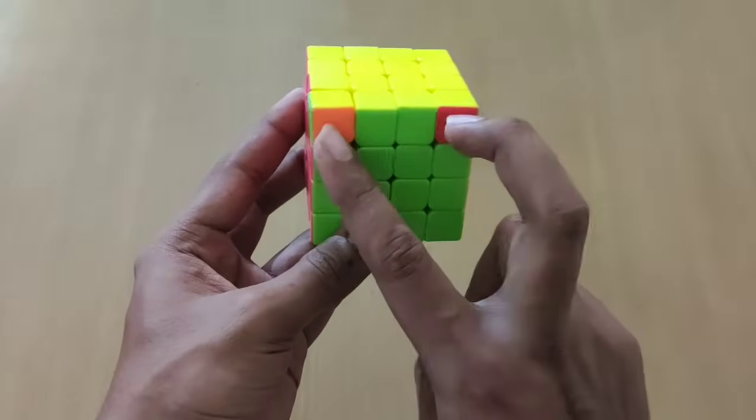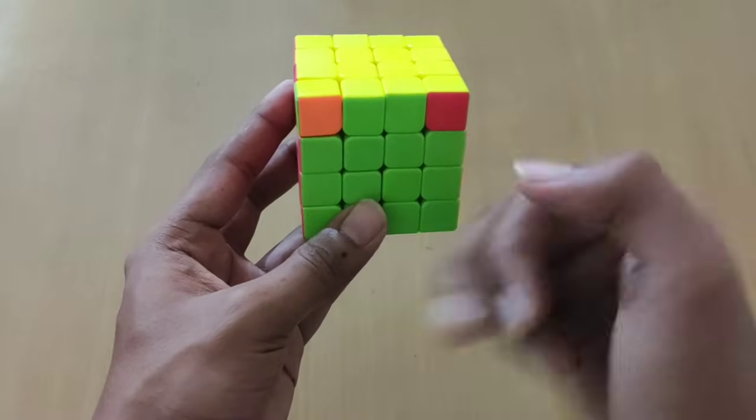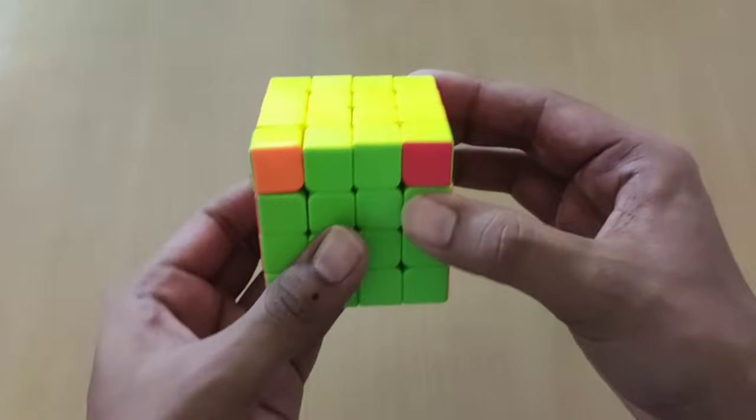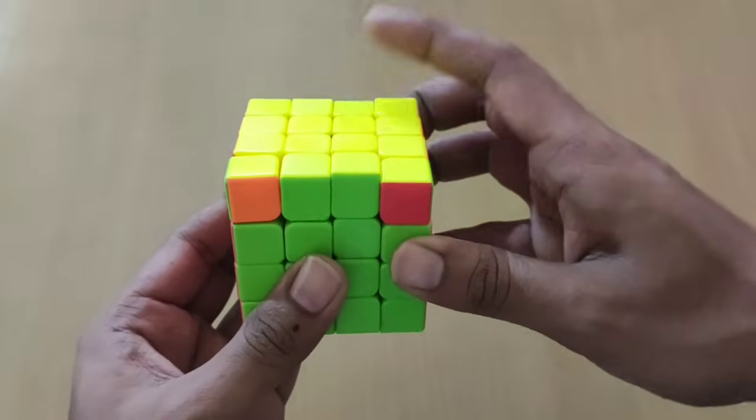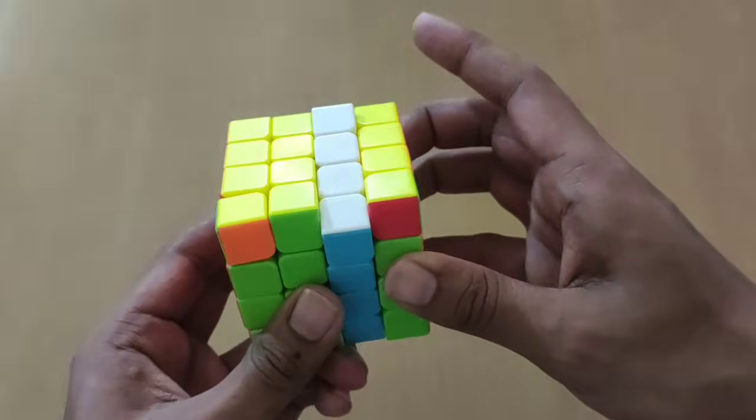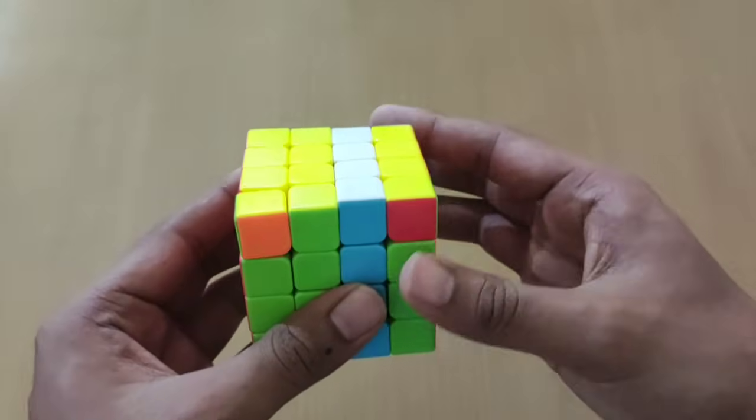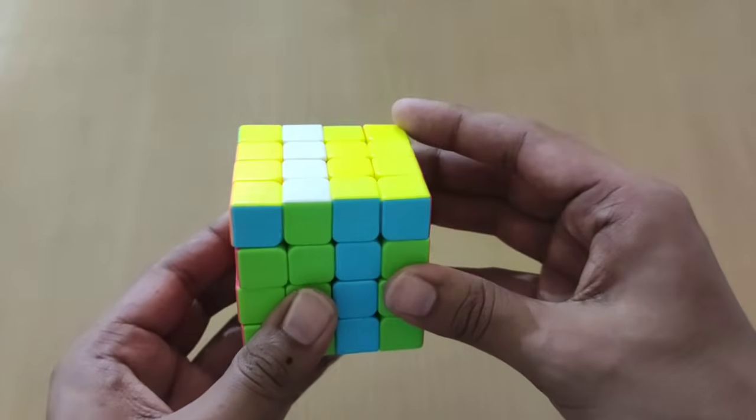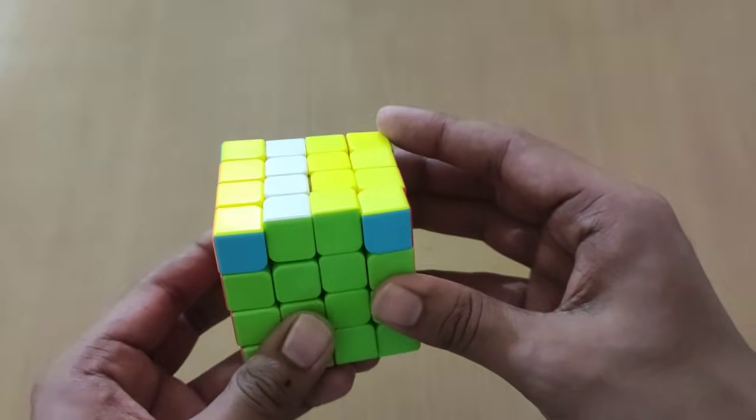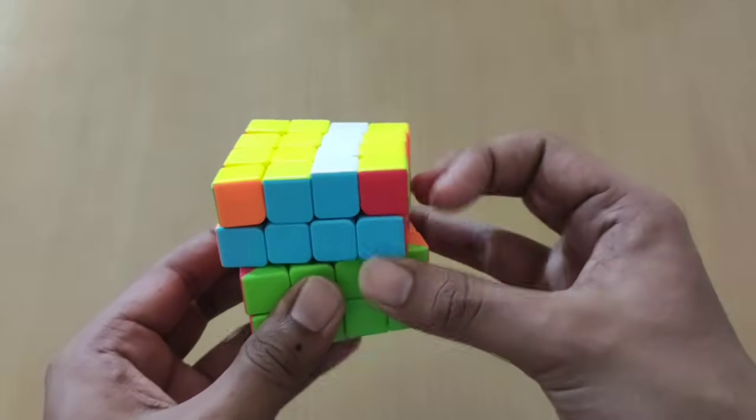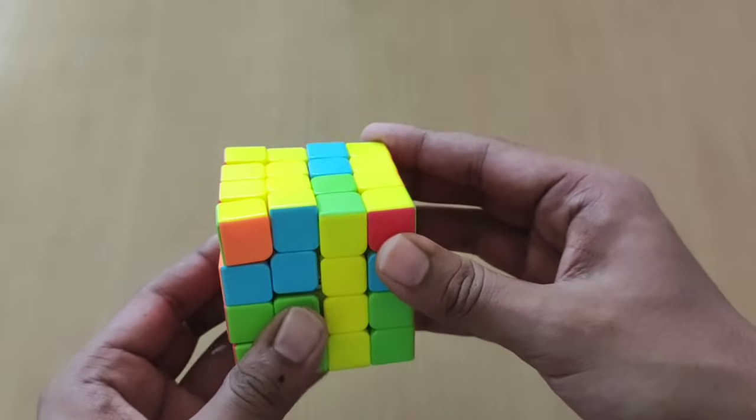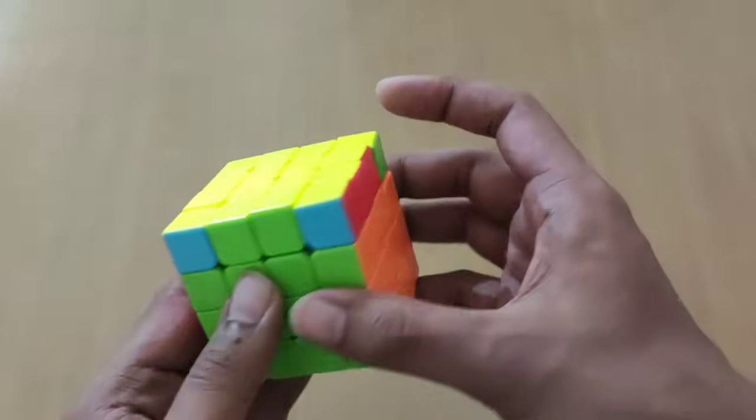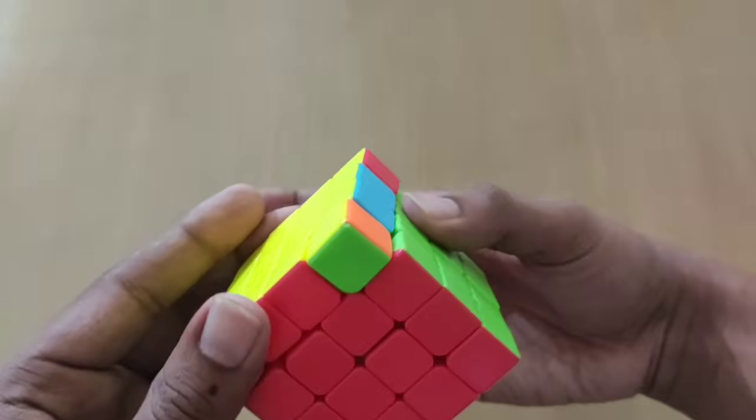For this, you have to hold these two corners which have to be swapped in the front, and then start with this algorithm: small r2, capital U2, small r2 again, small u2 (two layers together), small r2, small u2, and then you need to match the sides.